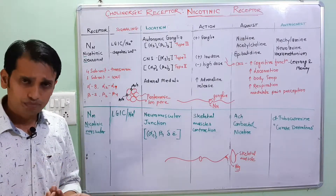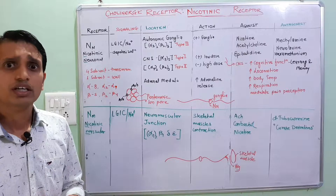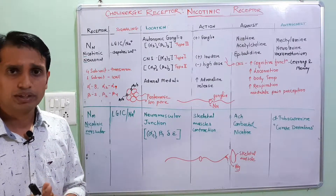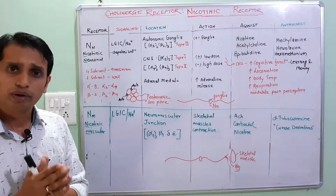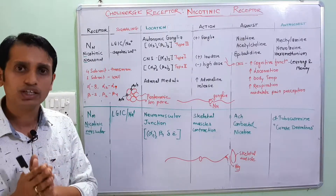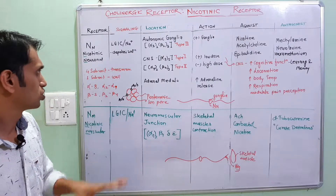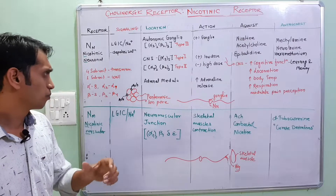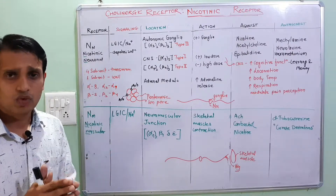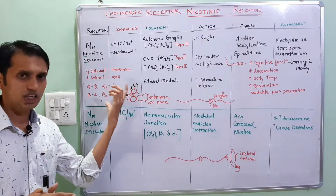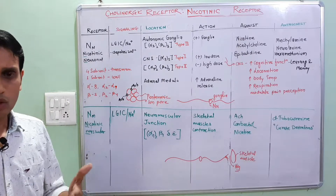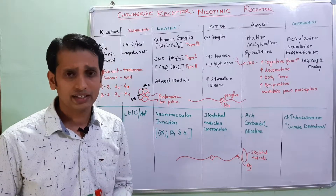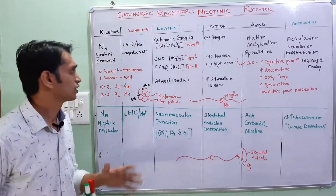Activation of nicotinic receptors causes cellular depolarization and produces cellular signals via sodium ion channels — sodium ion is the main molecule for signaling. One important feature is that it is a pentameric structure, and for the activation of this receptor, mainly two molecules of acetylcholine are required. The acetylcholine molecules bind to their locations on the receptor subunits.